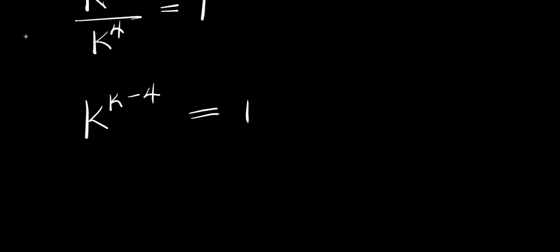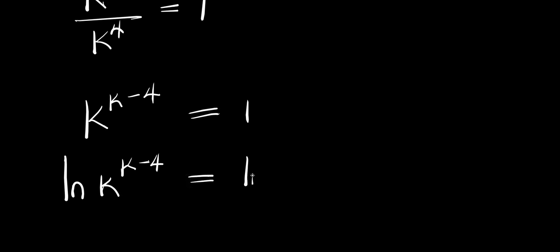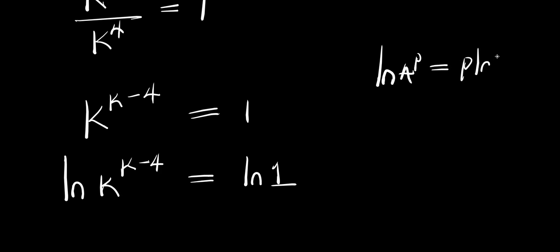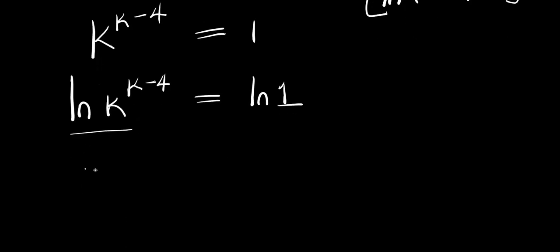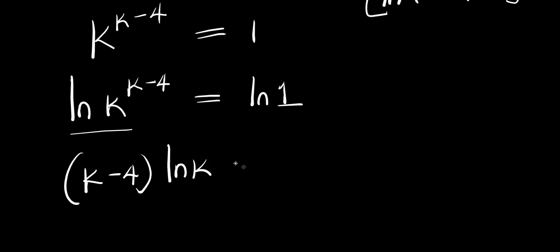At this point I apply the natural log to both sides: natural log of k^(k minus 4) equals natural log of 1. Applying the log power rule, we have (k minus 4) times natural log k equals 0, since natural log of 1 is 0.